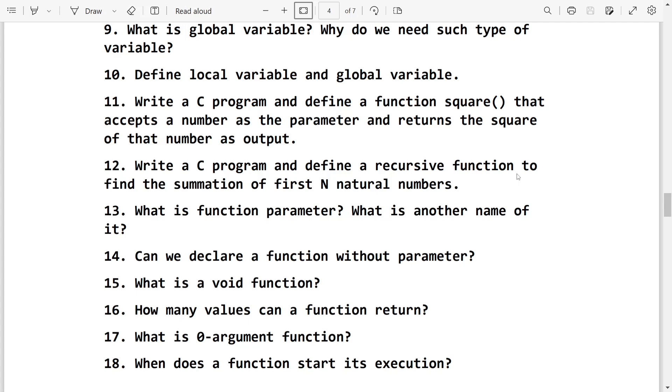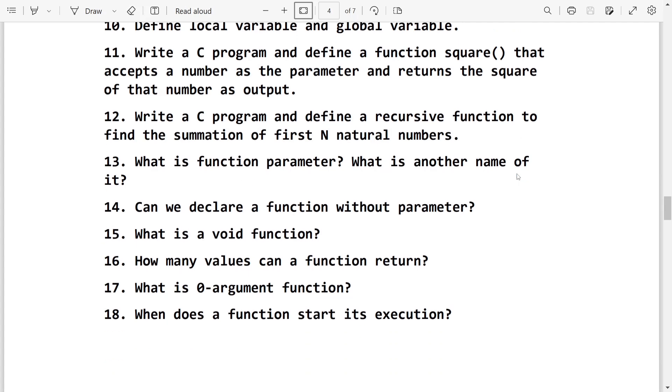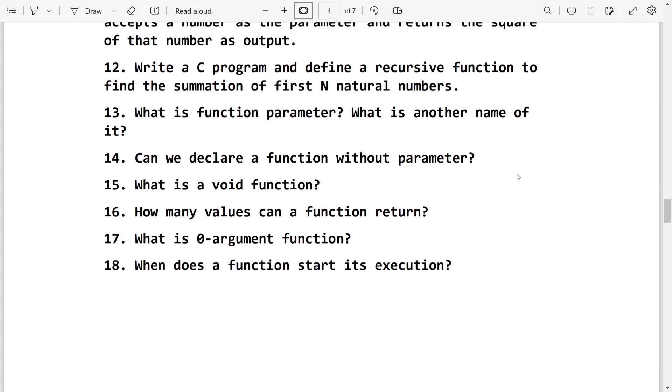After that, what is function parameter, what is the another name of it. The another name is arguments. Then can we declare a function without parameter. Yes, we can declare. What is void function. When the function returns nothing, it is void function. How many values a function can return. A function can return only one value.